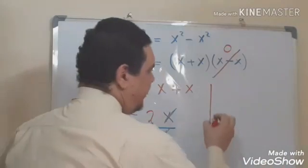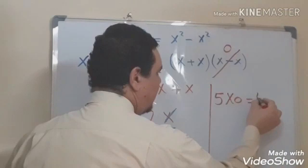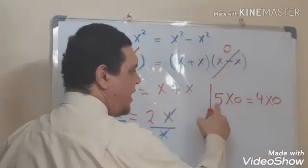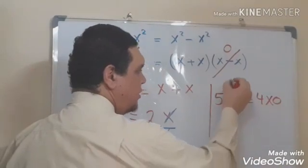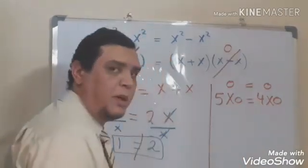For example, 5 times 0 equals 4 times 0. We can write 0 equals 0. No problem.